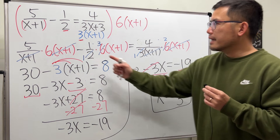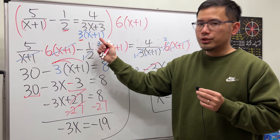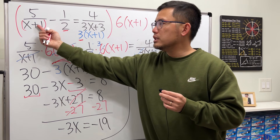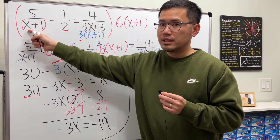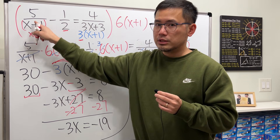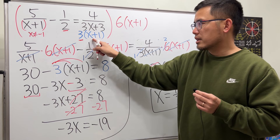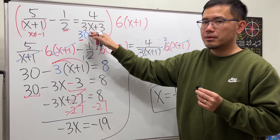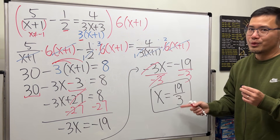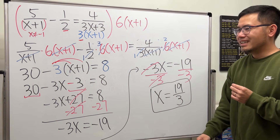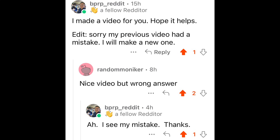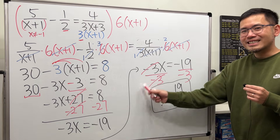You should put this back into the original denominators to ensure we do not have zero. The only number that will make the denominator equal zero is when x equals negative one, so x cannot be negative one — otherwise you get zero on the bottom. Since our answer is 19 over 3, we know we're good. Hopefully this helps, and thank you for pointing out my mistake in the previous video.